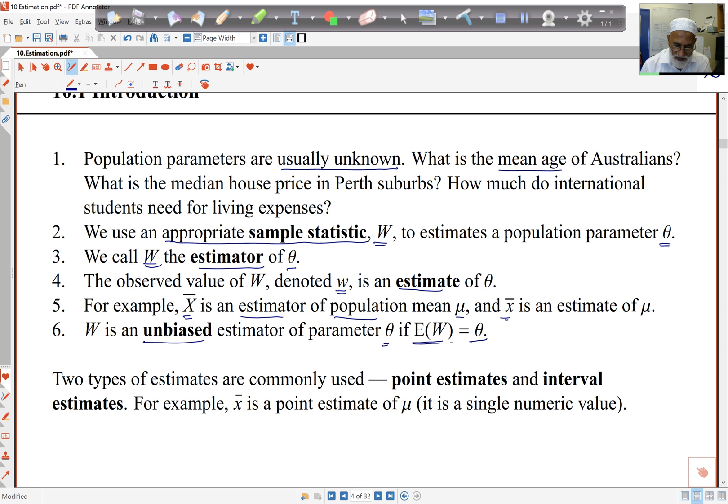So we use two types of estimators, point and interval. Point is a single observation, single point, such as X bar here, and interval we'll see as we go through.